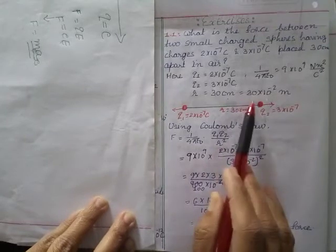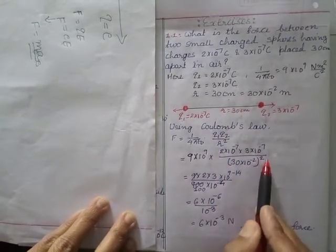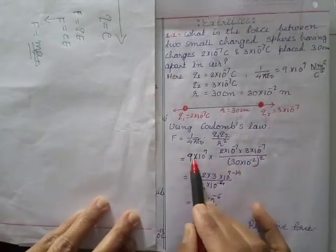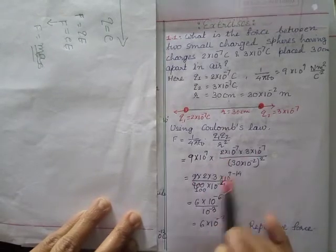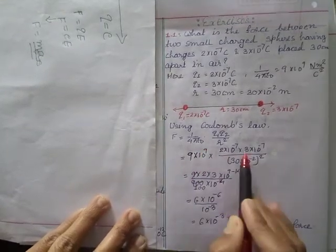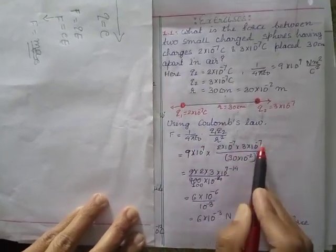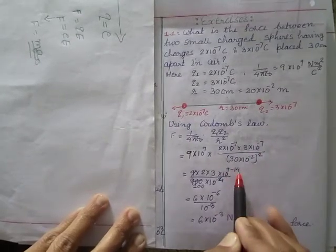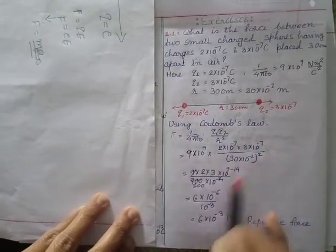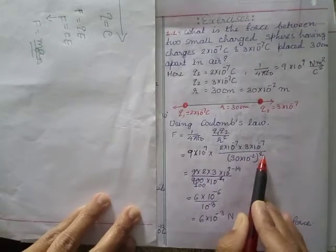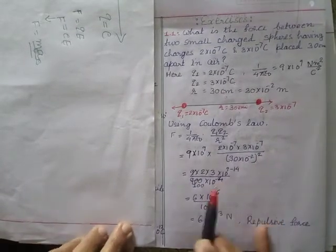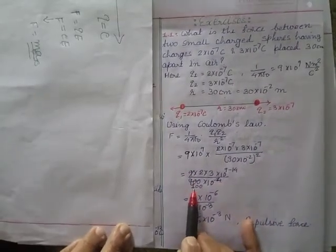I am simplifying. 2×3 I am bringing here. 10⁹ and -7, -7 is -14, so 9-14. 30² will be 900, 10⁻² squared will be 10⁻⁴. I am cutting here, so comes 100. 100 means 10², so 10² and 10⁻⁴, so denominator is 10⁻³.